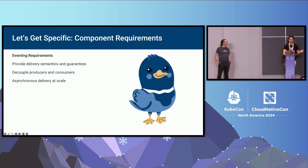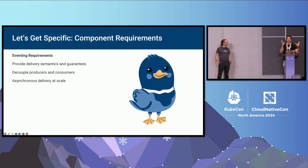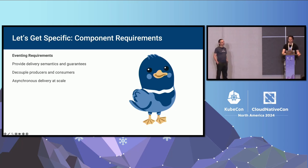Moving on to eventing, the main requirements were: you should be able to give different delivery semantics and guarantees to users; it should completely decouple event producers from event consumers as much as possible; and it should be able to do asynchronous delivery of events at large scale.